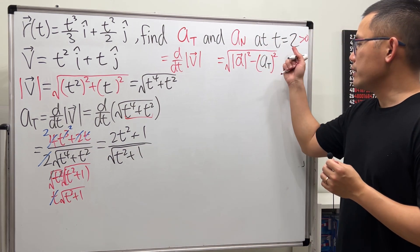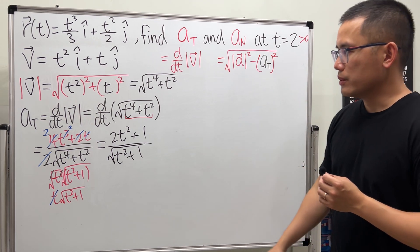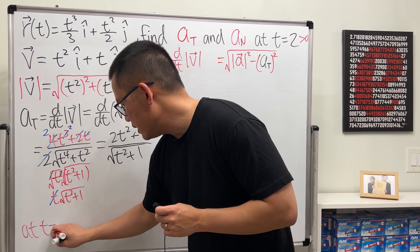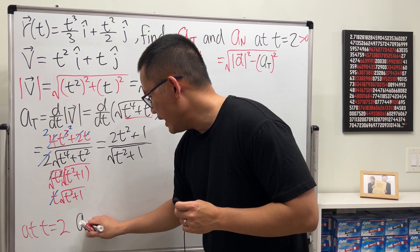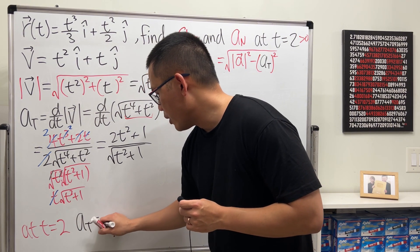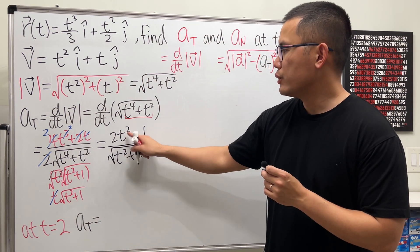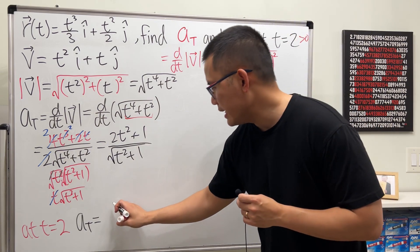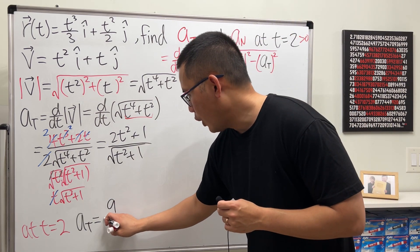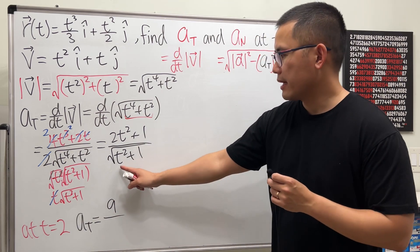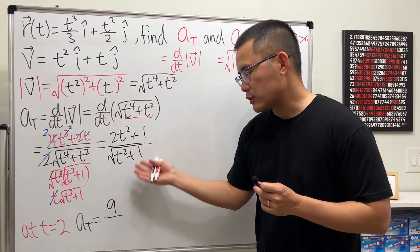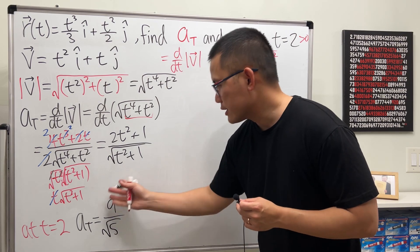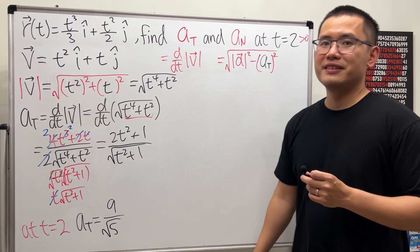After simplification, we end up with Aₜ = (2t² + 1) / √(t² + 1). Because we want t = 2: plugging in, the numerator is 2(4) + 1 = 9, and the denominator is √(4 + 1) = √5. So Aₜ at t = 2 is 9/√5.